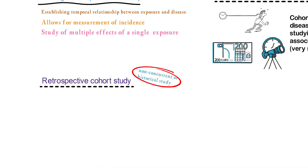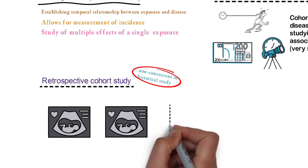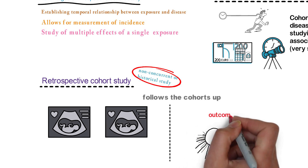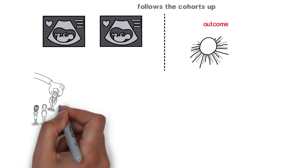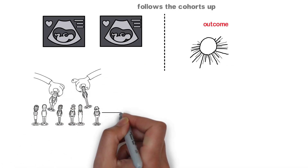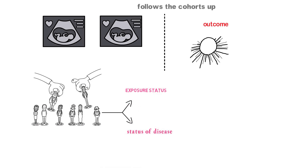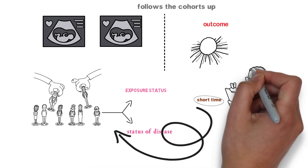Retrospective cohort study is also known as non-concurrent or historical study, in which the investigator goes back into history to define exposure — for example, children exposed to x-rays in utero versus those who were not — and then follows the cohorts up to the present to see what outcomes have occurred. The investigator uses existing data collected in the past to identify the population and the exposure status, determines the present status of disease, and spends a relatively short time to assemble the study population from past data and determine disease status at the present time.